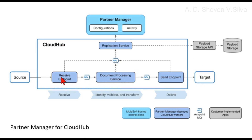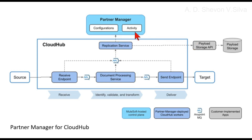The document processing service is connected to MQ, and MQ is connected to the send endpoint. The receive endpoint, document processing service, and send endpoints are all connected to Anypoint MQ. Anypoint MQ is connected to the replication service. The replication service connects to the Partner Manager and the payload storage API. The payload storage API configurations and activity are in Partner Manager. Anypoint replication service connects to the payload storage API, which in turn connects to payload storage.